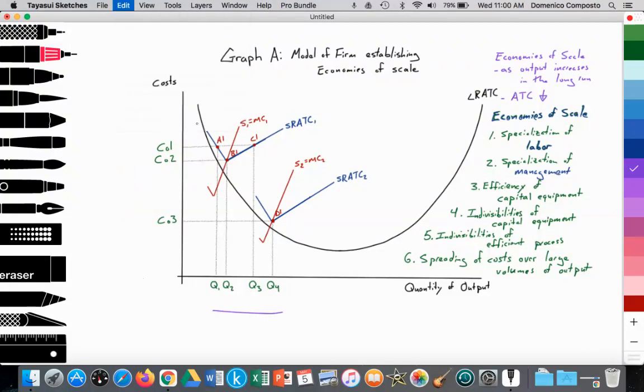We're going to illustrate this by using two short run average total cost curves. Here we have the SRATC curve, this blue line here, short run average total cost curve 1, and then a second one, this blue line over here. We also see our supply curve, our upward slope supply curve, equal to our marginal cost curve. It is intersecting the average total cost curve at its lowest point, which indicates productive efficiency.